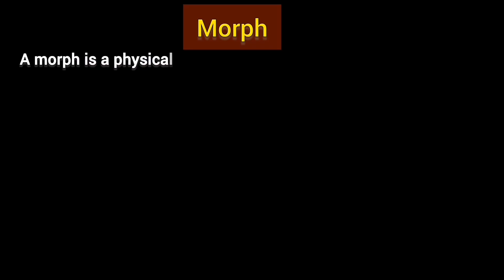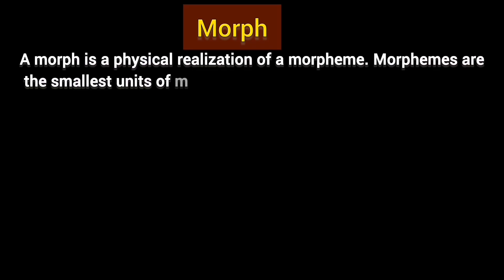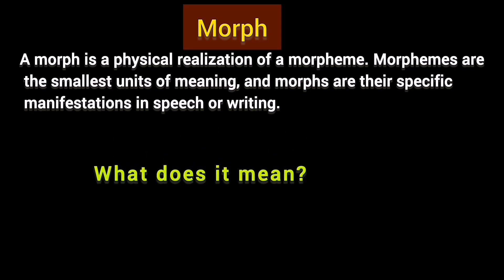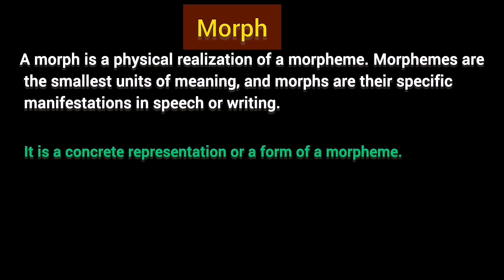A morph can be defined as: a morph is a physical realization of a morpheme. Morphemes are the smallest units of meaning, and morphs are their specific manifestations in speech or writing. Simply, a morph is the concrete representation or form of a morpheme. As we discussed, a morpheme is abstract in nature — but when we represent that abstract meaning in a concrete form, in speech or in writing, it is called a morph.